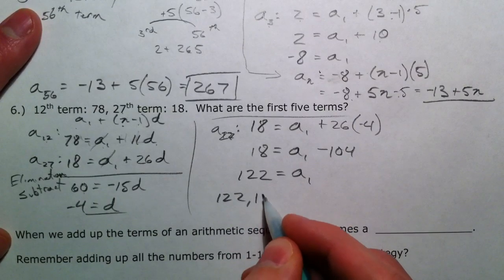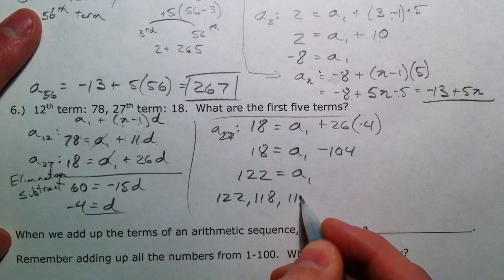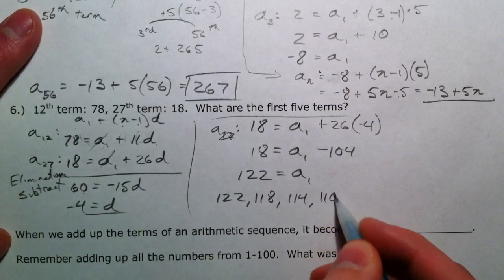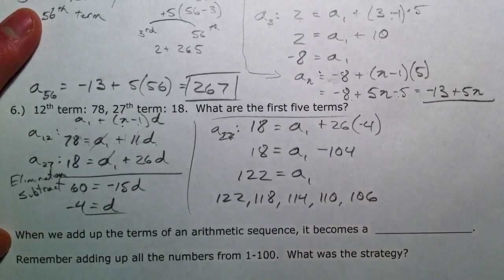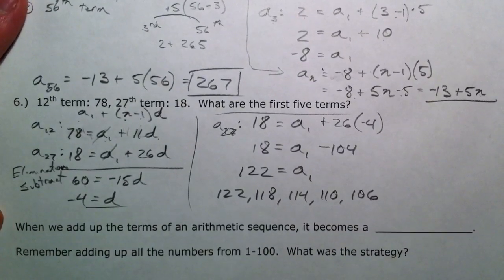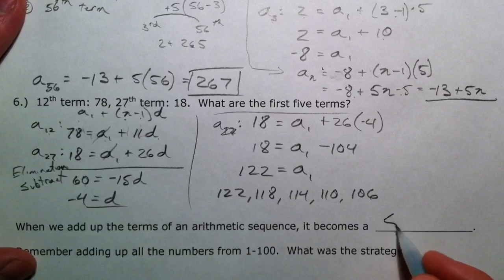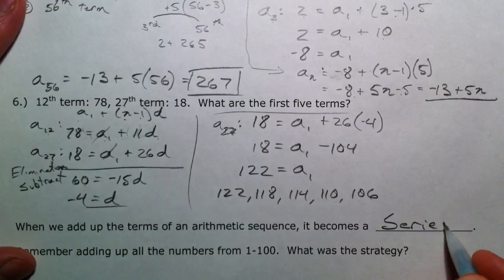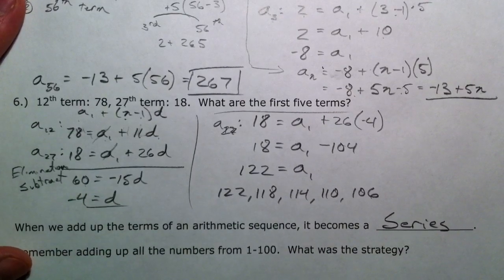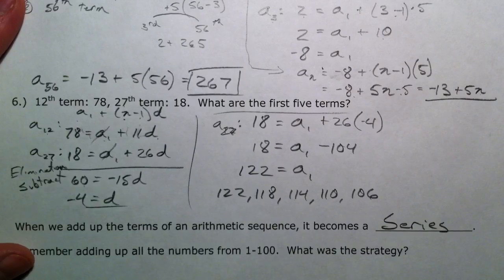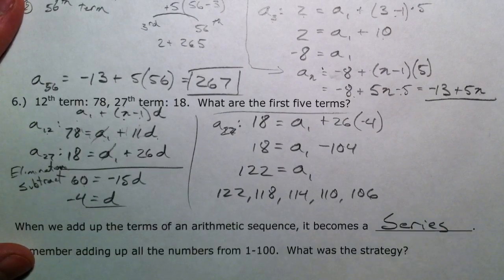So we're going down: 118, 114, 110, 106. Now imagine what would happen if we added up all these terms. Well, then it becomes a series. So the difference between the sequence and the series is one is just a pattern—sequence—and the other is adding them all up, a series.